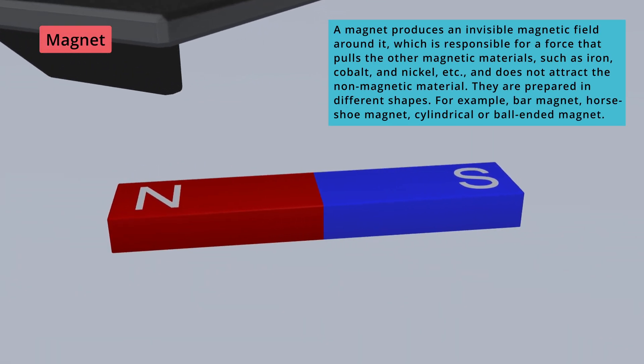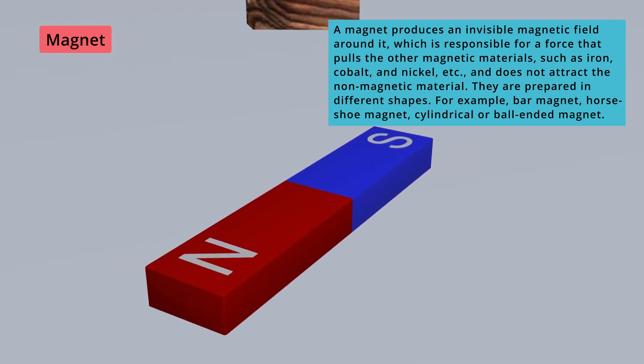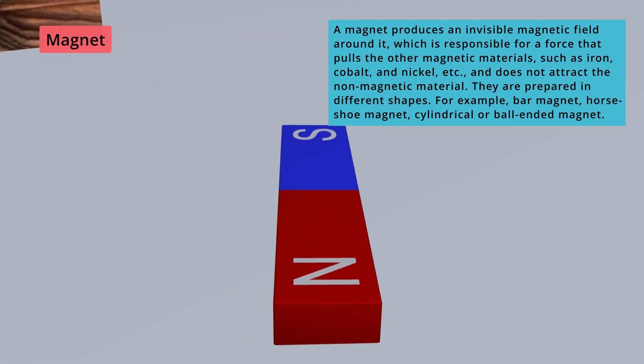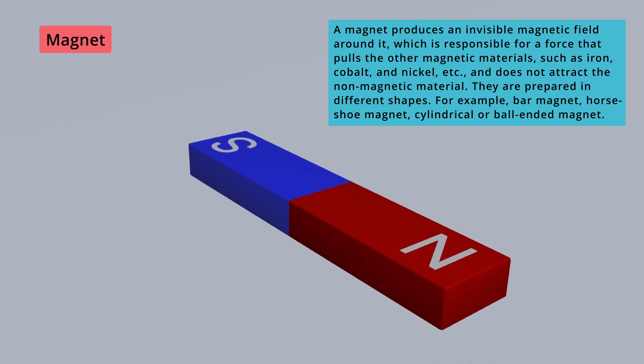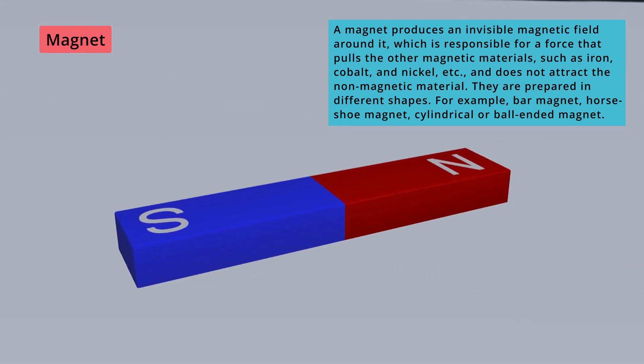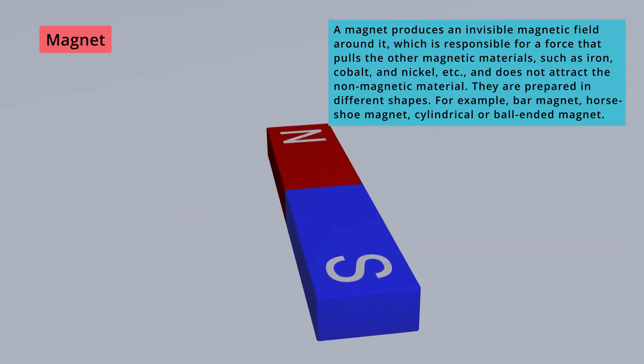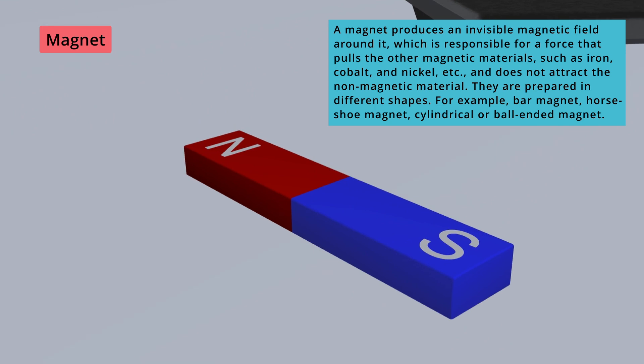A magnet produces an invisible magnetic field around it, which is responsible for a force that pulls the other magnetic materials, such as iron, cobalt, and nickel, and does not attract non-magnetic material. They are prepared in different shapes.